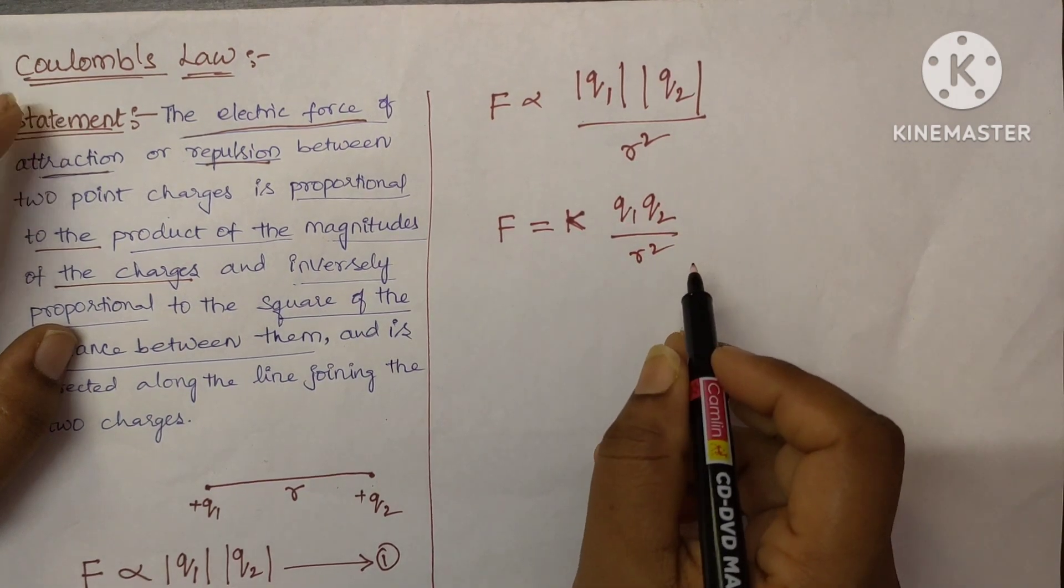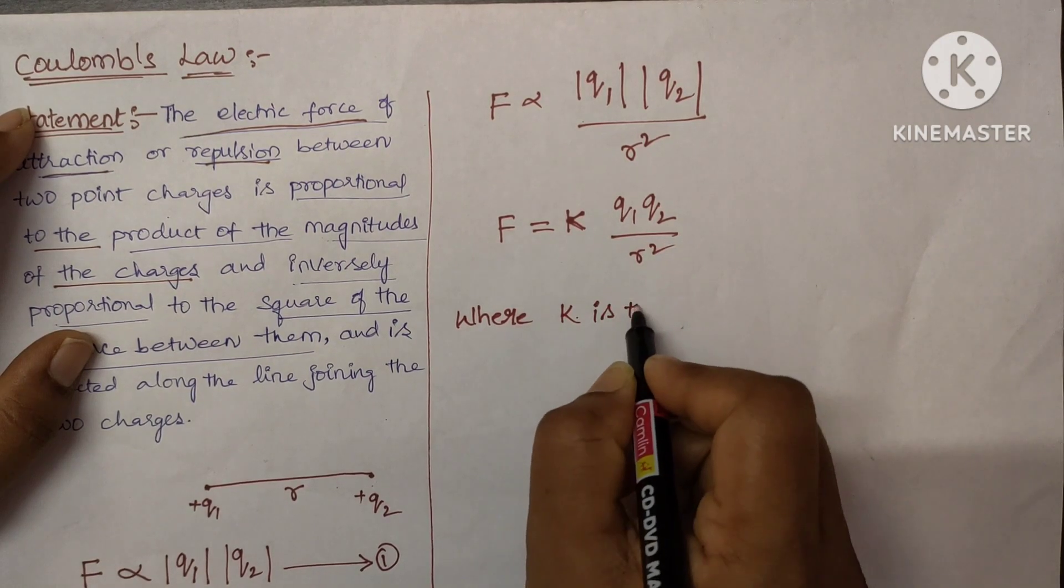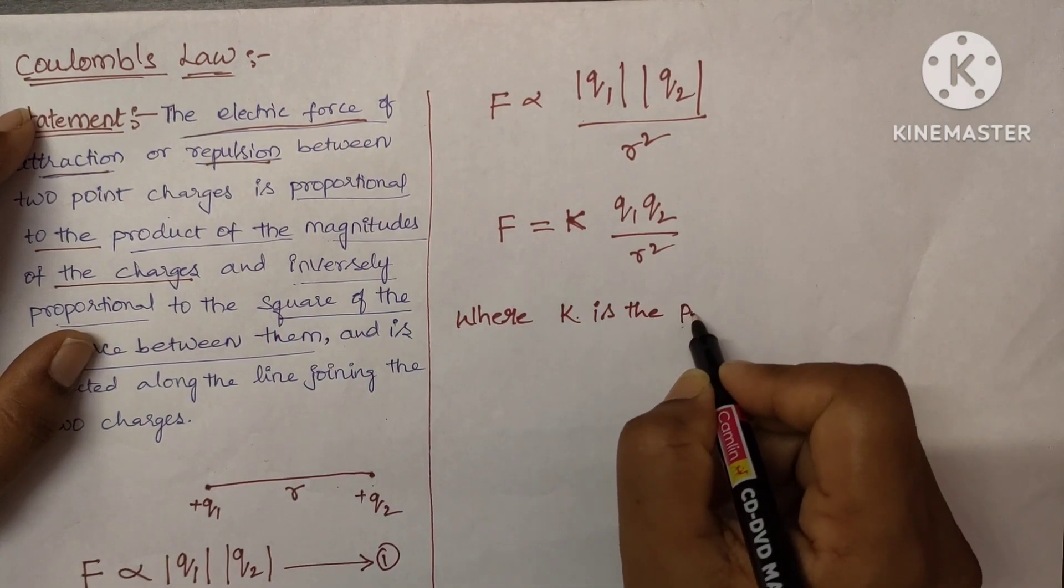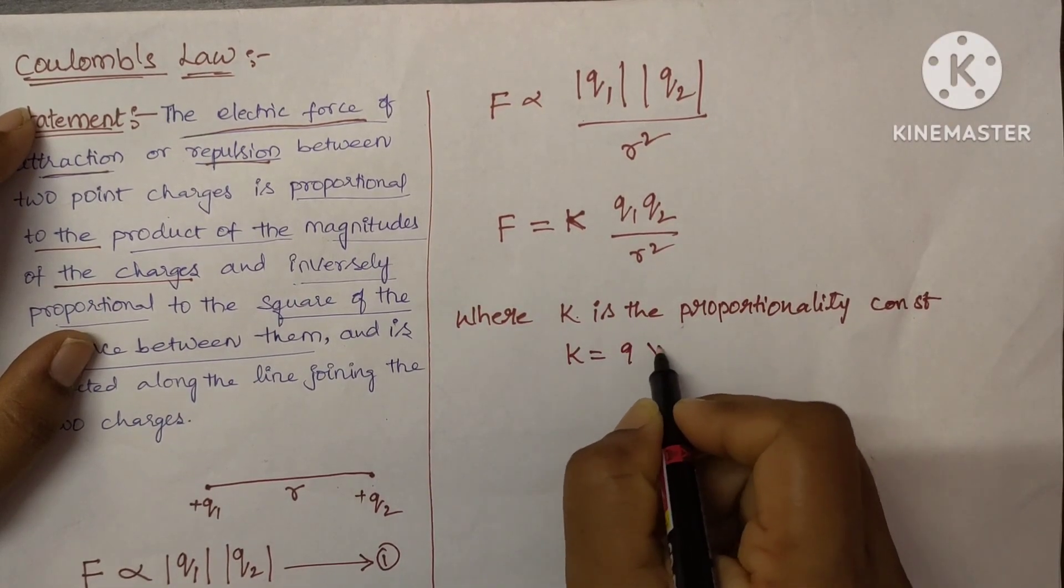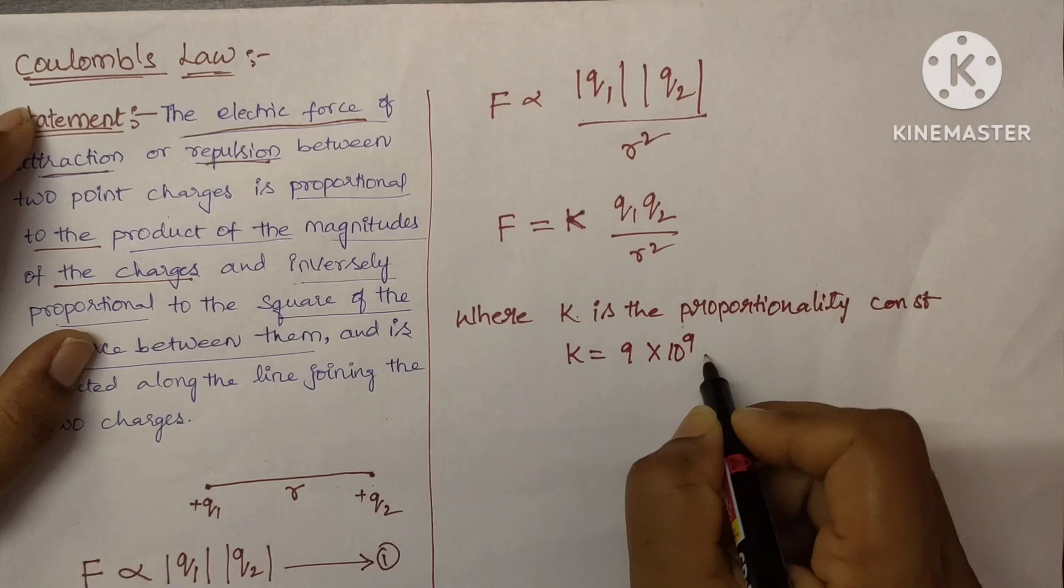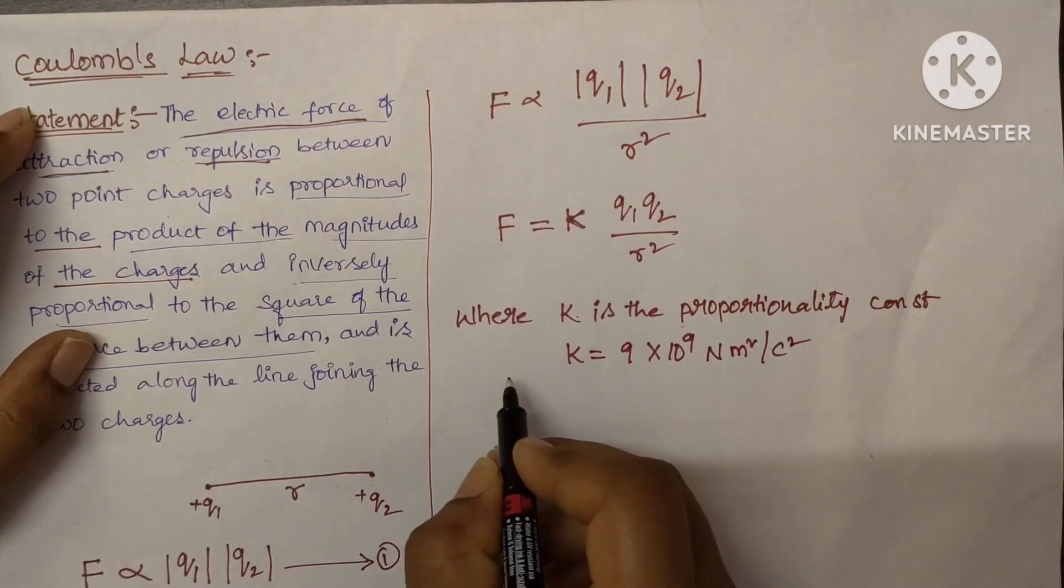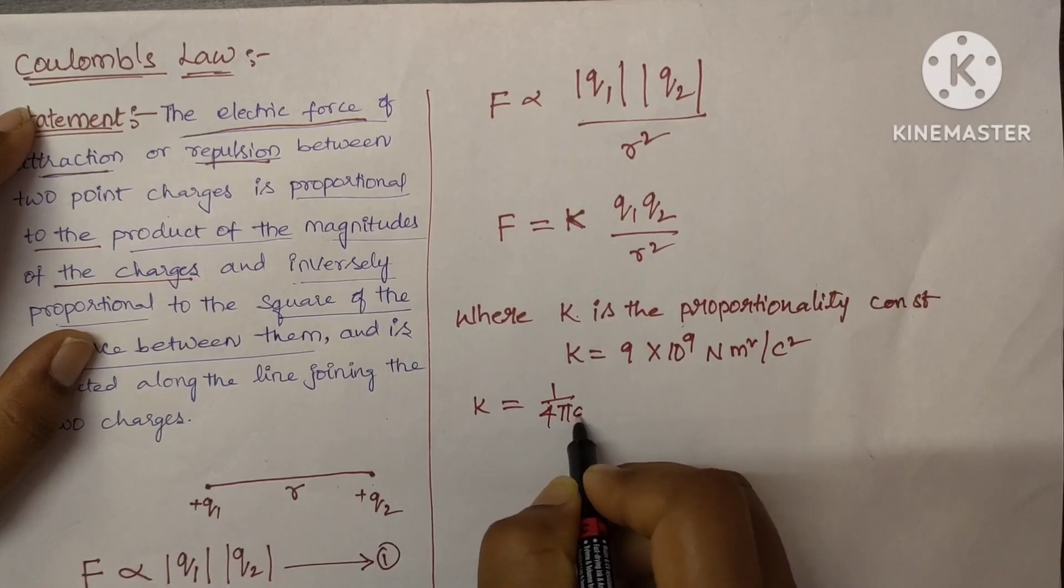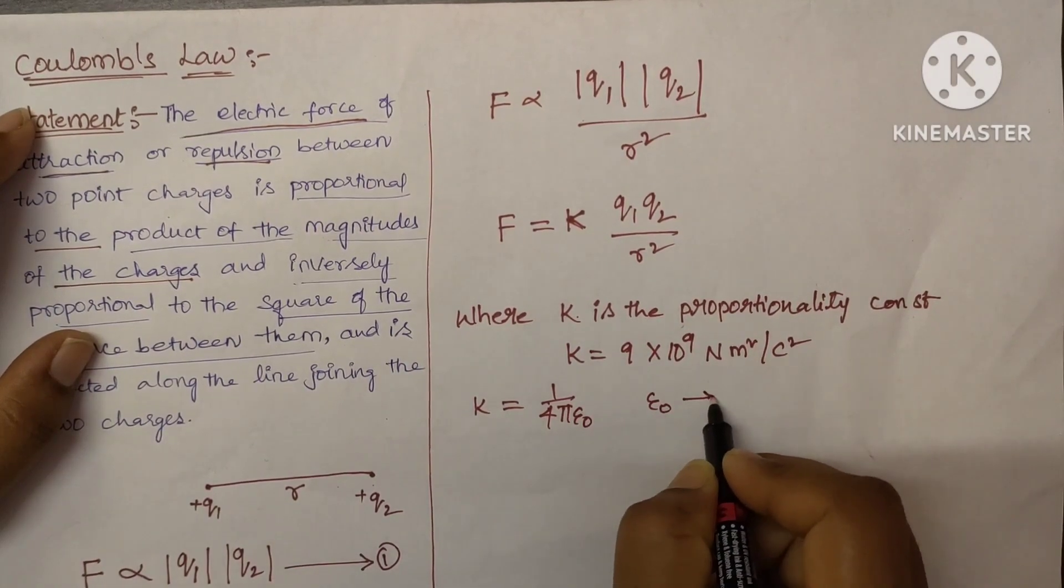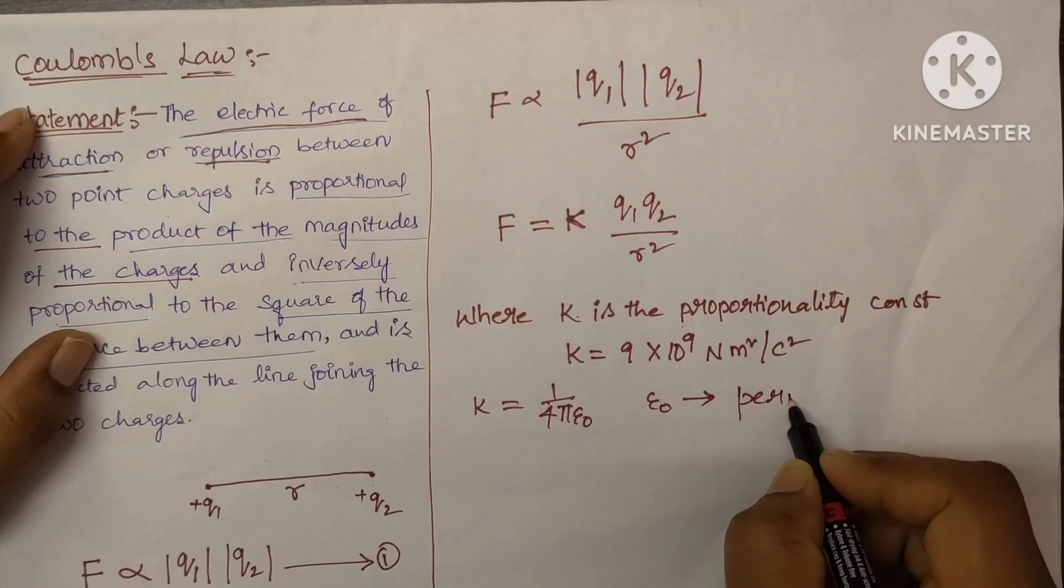Here, Q1, Q2 are the magnitudes of charges. Here, K is the proportionality constant and whose value is K equal to 9 into 10 power 9 Newton meter square per Coulomb square. And K can also be expressed in terms of permittivity of free space. That is, 1 by 4 pi epsilon 0. Here, epsilon 0 is the permittivity of free space.